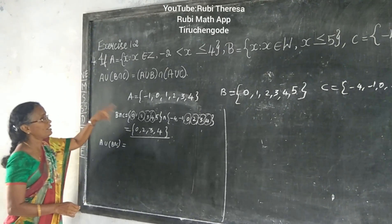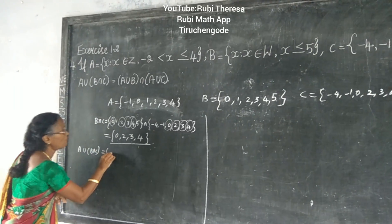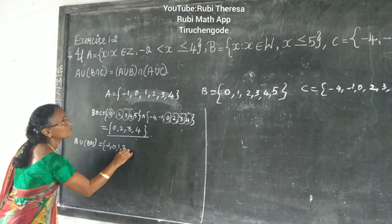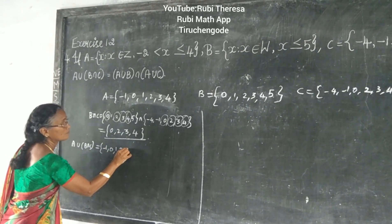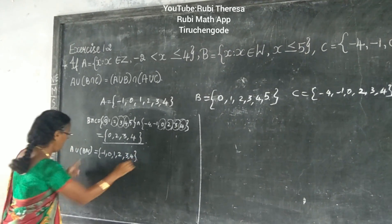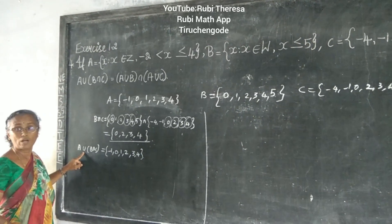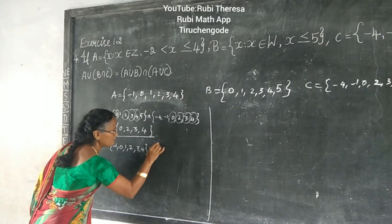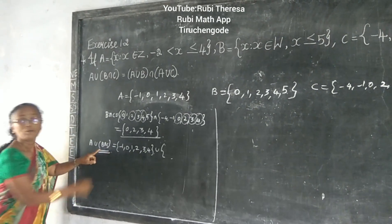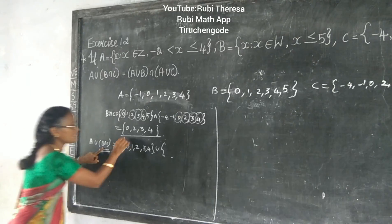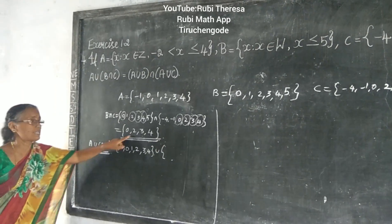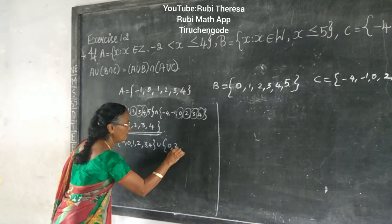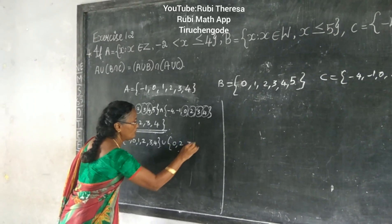So what is A? A is: minus 1, 0, 1, 2, 3, 4. What operation is given here? Union. Next, B intersection C is: 0, 2, 3, 4. What should you do? Union — unite them together.